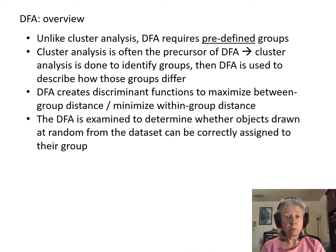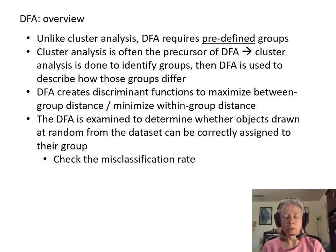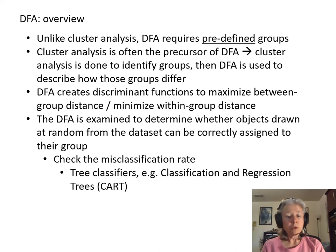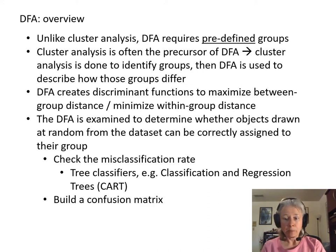The DFA is examined to determine whether objects drawn iteratively from the dataset can be correctly classified to their appropriate group, so you have to check your misclassification rates. To check the rate of misclassification, we will use a tree classifier approach — often generically called CART, though technically CART is one specific copyrighted and trademarked example. We will then build a confusion matrix to determine which groups are consistently confused with which other groups.